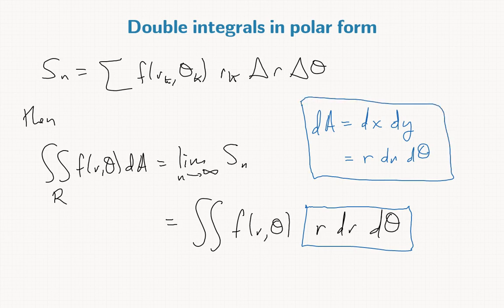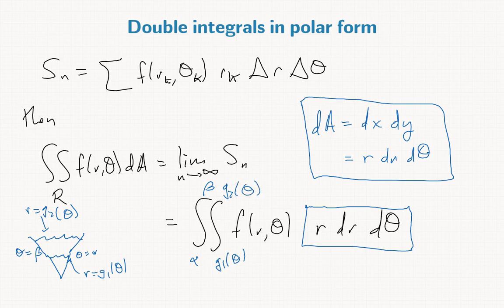For our bounds, if we assumed our bounds were theta equals alpha to theta equals beta, we'll have going from alpha to beta here. And there was some curve r equals g1 of theta and r equals g2 of theta, the upper and lower bounds for the r part of this integral. There's a form of Fubini's theorem saying you could rewrite the integral in either order.